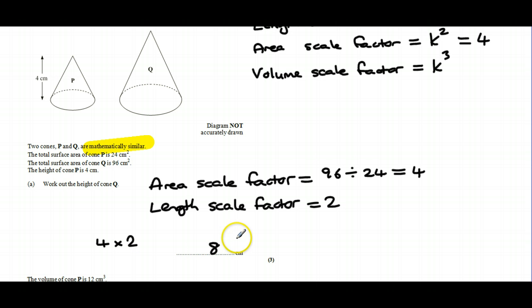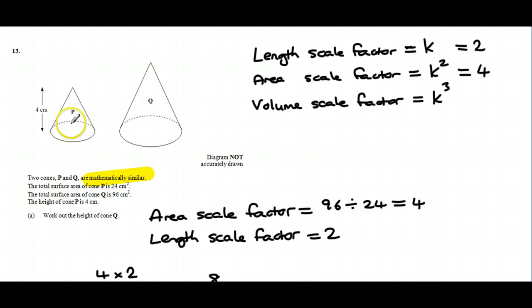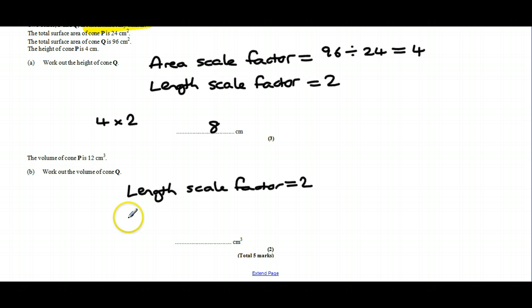The next question talks about the volume of cone P is 12 centimeters cubed, work out the volume of cone Q. Well, we know that the length scale factor is 2 now, and if we go back up to the information at the top, if the length scale factor is 2, then we're going to need to work out 2 cubed, 2 times 2 which is 4 times 2 again which is 8. So it means that the volume is actually going to be 8 times bigger. So we're going to need to take the volume of P and times it by 8, and if we do that we end up with 96 centimeters cubed.